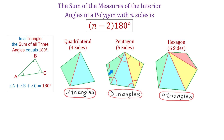In a pentagon we have three triangles and the sum of the angles in each one is 180 degrees. Then the sum of the interior angles in this pentagon will be 3 times 180 degrees, which equals 540 degrees.